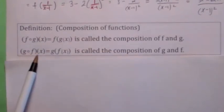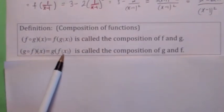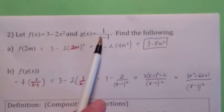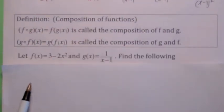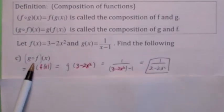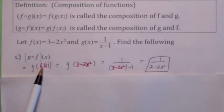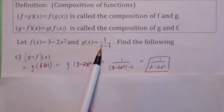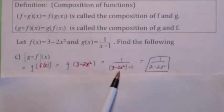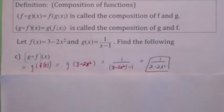Don't get that confused with g circle f of x, which would be g of f of x. Here you're first computing f of x and then plugging this whole expression f of x into x in g of x. Let's go back to those same two functions. What would g circle f of x be? That means g of f of x. The inside function is f of x, so wherever there's an x in g of x, you're replacing it with 3 minus 2x squared. It simplifies down to 1 over 2 minus 2x squared.